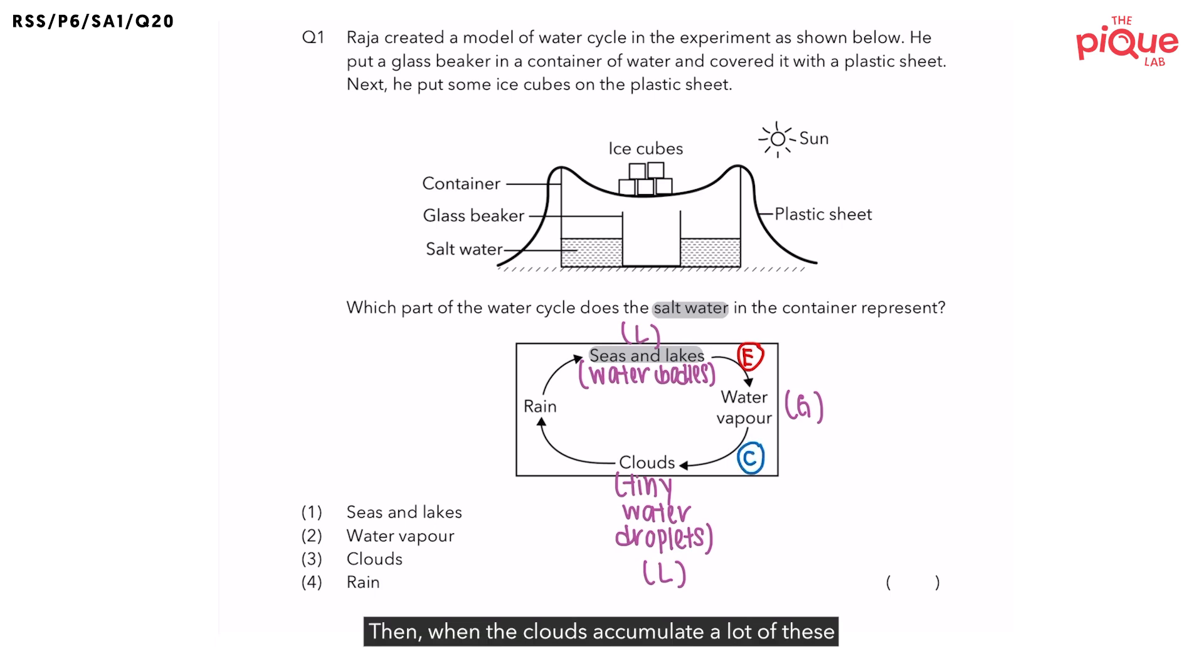Then when the clouds accumulate a lot of these tiny water droplets, the clouds start to become very heavy and they will turn into rain. Now which state is rain in? Rain is also in the liquid state. So from clouds to rain, was there any change in state? No, there wasn't any change in state. So this means that no heat process took place.